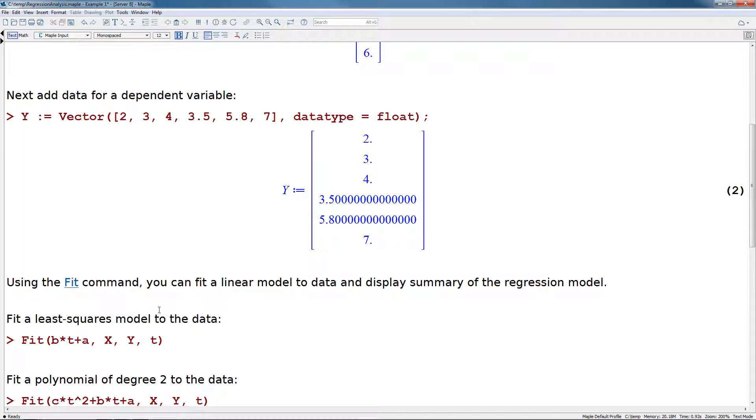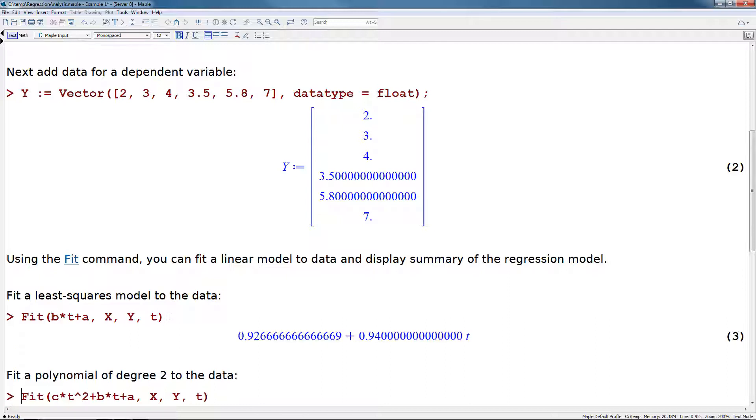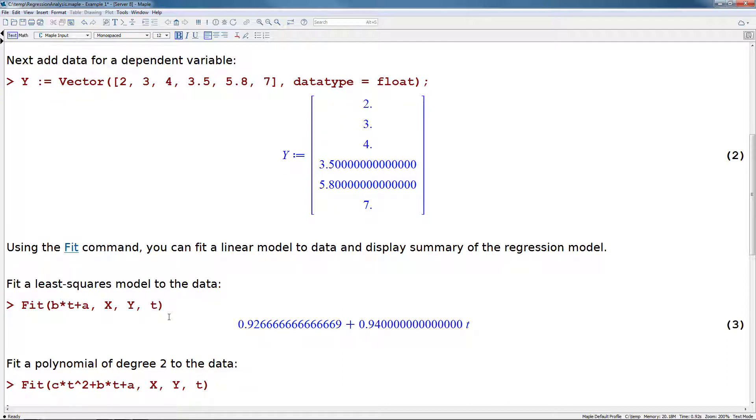Using the fit command, we can fit a linear model by specifying it as the first argument to the fit command. In this case, we would specify the model b times t plus a. Then as a second argument, we give the independent variable x. The dependent variable y is the third argument, and then t is our variable name. Pressing return gives us the resulting fitted model.